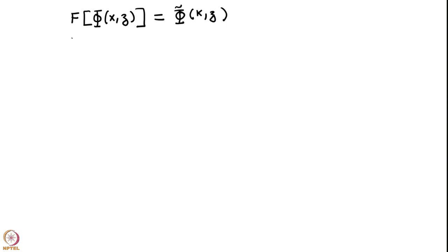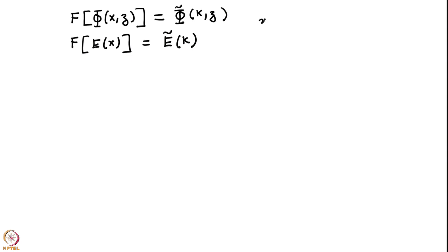Similarly, the Fourier transform of E(x) — I am writing the eigenfunctions in the normal mode analysis — every Fourier transform variable will have a tilde on top. Because E is just a function of x, it will become Ẽ(k), where x is replaced by k. So the Fourier transform replaces x by k and gives you a new function.